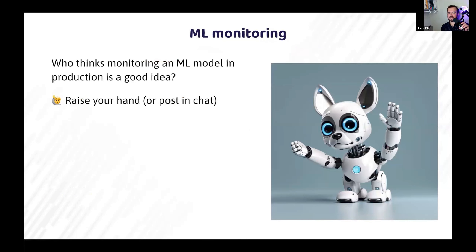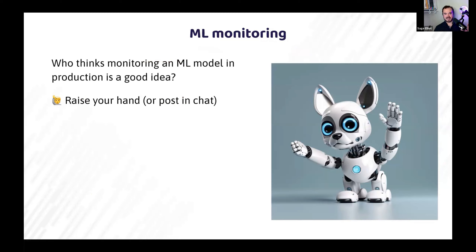Who thinks it's a good idea to monitor a model in production? I did a similar talk at a Google IO extended event — there were over 200 people in the room — and basically everyone raised their hand and said yes, it sounds great. Obviously we should be monitoring models in production; things can go wrong and we want to make sure they're behaving the way we expect.